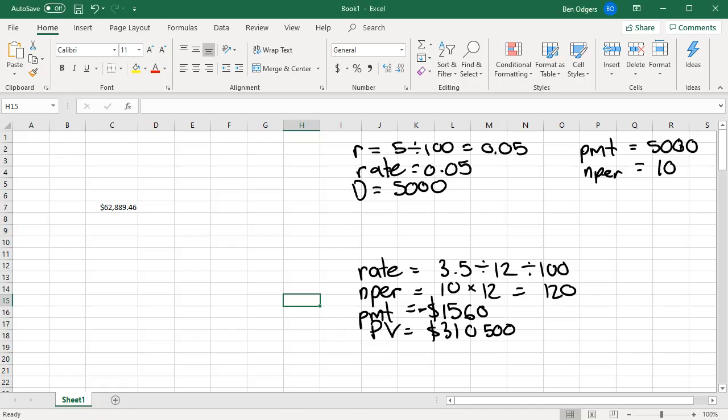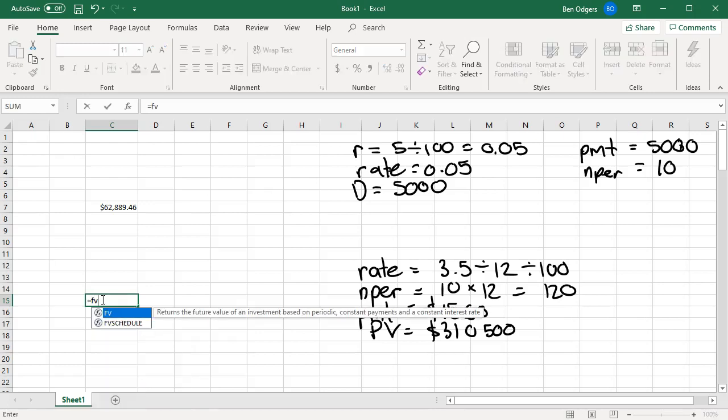So we'll go to Microsoft Excel now. I've copied across the values of these arguments. And I'll pick C15 equals FV for future value, and then open my brackets. The first thing we need to enter is our rate. And we're actually entering in a calculation. We're going 3.5 divide 12. Notice that I use the forward slash instead of the divide symbol, and then forward slash 100.